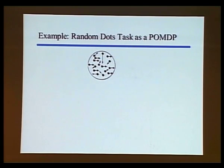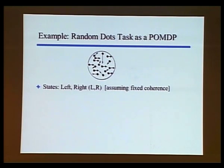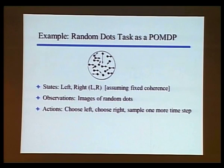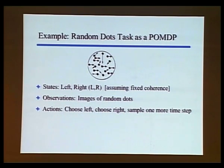How do you cast the random dots task as a POMDP? The hidden states are left versus right — what you're trying to figure out. Observations are the images of the dots and their motion. Actions include choosing left, choosing right, or — importantly — waiting to sample one more time step. That third action is implicit but important: if you're not ready to decide, you can wait and gather more data. These are reaction time tasks where the movie keeps going until the monkey decides, which turns out to be the optimal thing to do.